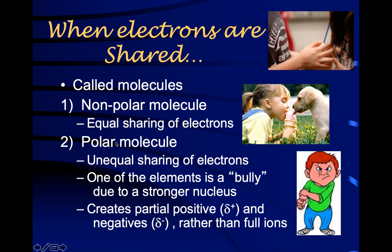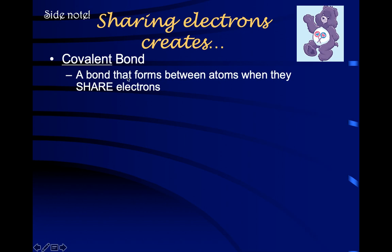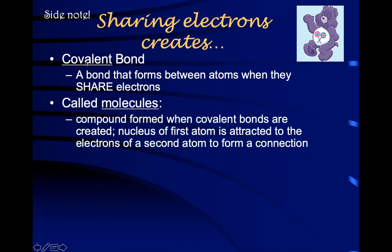Instead of a full positive and negative charge in a polar molecule, you create partial positive and partial negative charges represented by the Greek letter delta with a plus or minus sign (δ+ and δ−). A covalent bond is a bond that forms between atoms when they are sharing electrons. The result is called a molecule — a compound formed when covalent bonds are created. The nucleus of one atom in the molecule is attracted to the electrons of the other atom, and that connection is the covalent bond.